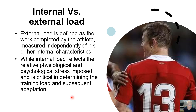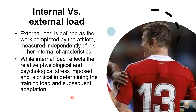Load comes in two forms: internal and external load. This connects with what I mentioned earlier — the notion of intensity not being a quantifiable unit. External load is the work completed by the athlete, measured independently of his or her internal characteristics. So speed is an external load; the load lifted in the gym, training at 90% one-rep max — that's an external load. Internal load reflects the relative physiological and psychological stress imposed through the external load, and that is the critical bit in determining training loads and subsequent adaptation.